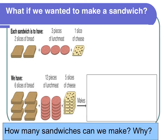Today's topic is limiting reactant. Take a look at my little sandwich board here. We want to make some sandwiches, and each sandwich needs to have two pieces of bread, three pieces of lunch meat, and a piece of cheese. Given these items, how many sandwiches can we make?